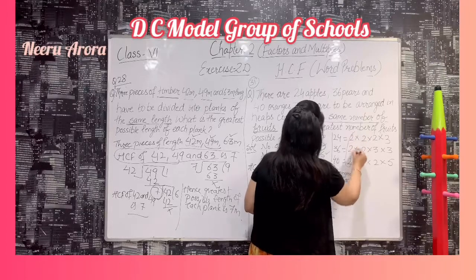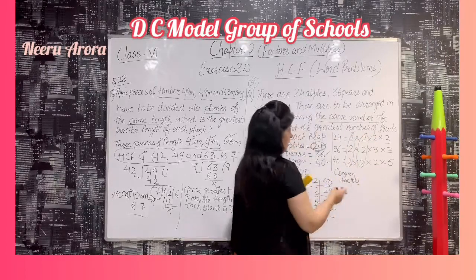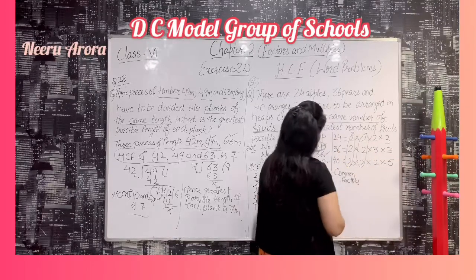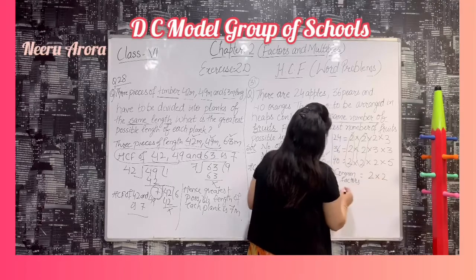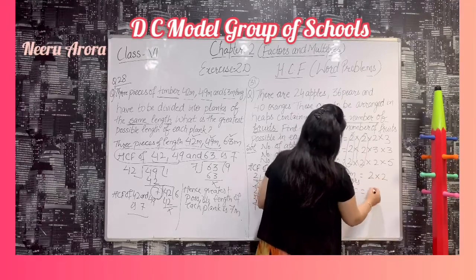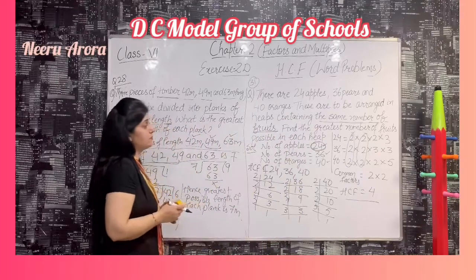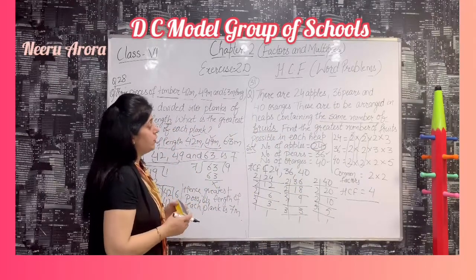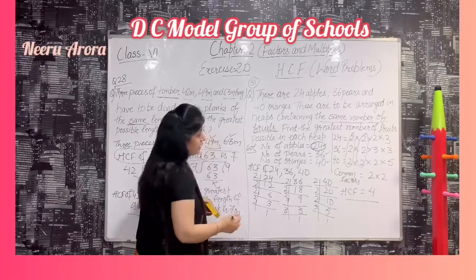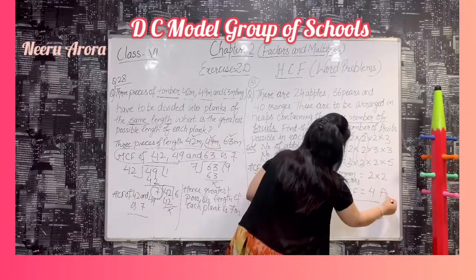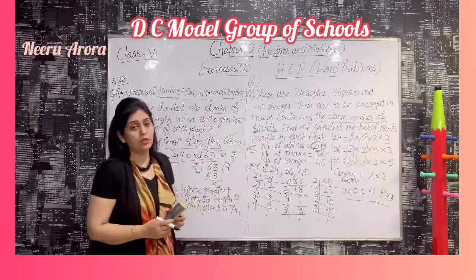We find the common factors: 2 is common, and then another 2 is common in all three numbers. There is no further common factor. So the common factors are 2 × 2 = 4. Therefore, the HCF is 4, and 4 is the greatest number of fruits possible in each heap. I hope it is clear to you. Thank you.